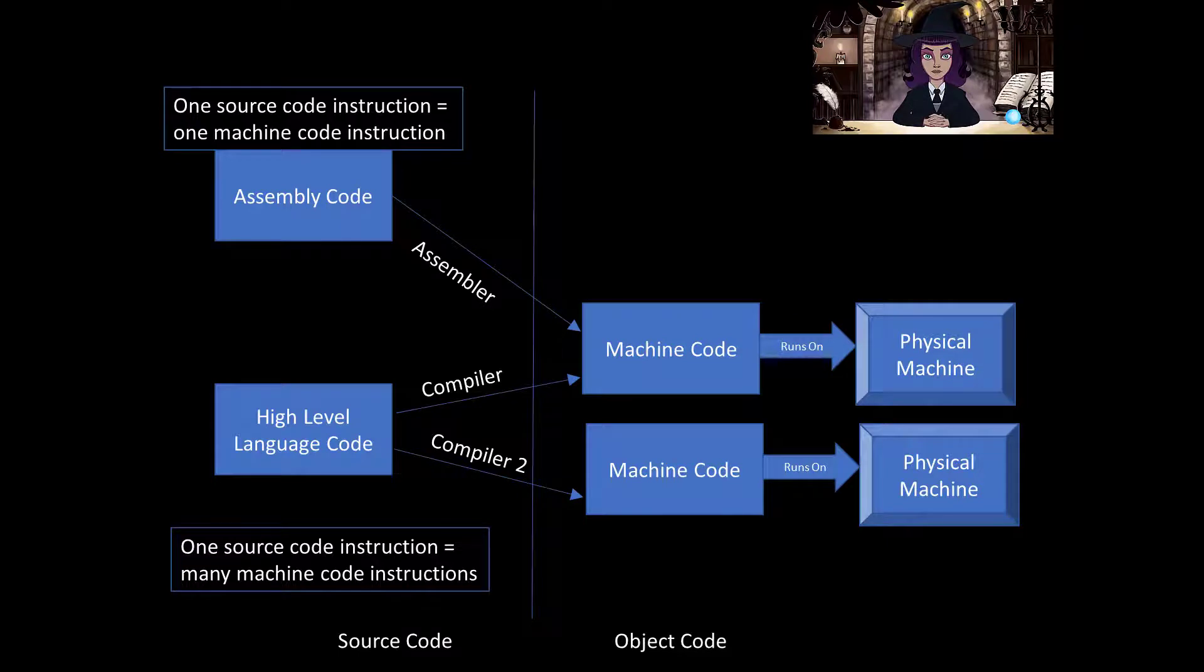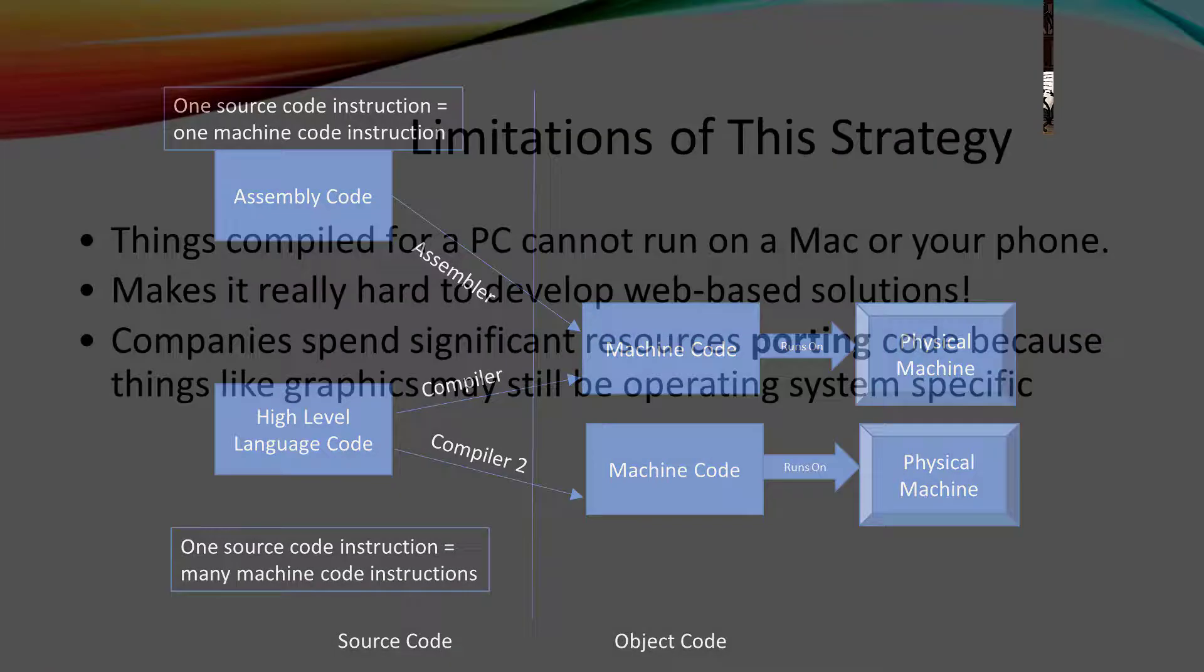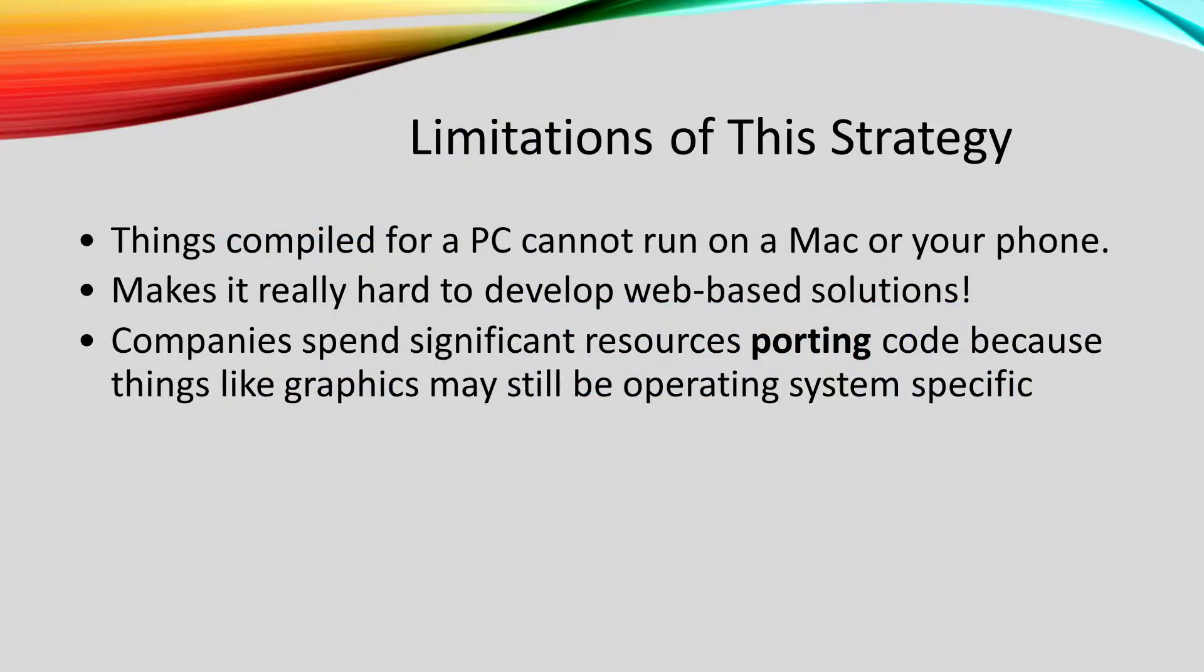That's a great summary, Zoomy. High level languages did make things better. But as the number of types of machines grew, we had new troubles. Higher level languages helped because one solution could be compiled to run on multiple machines. However, we still have to have a compiler for each type of machine you want your program to run on.